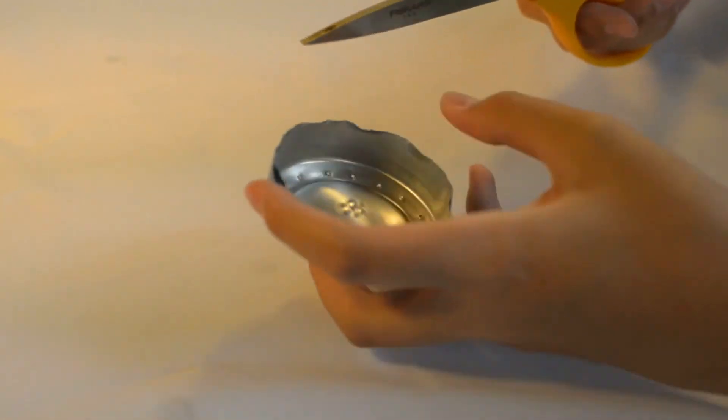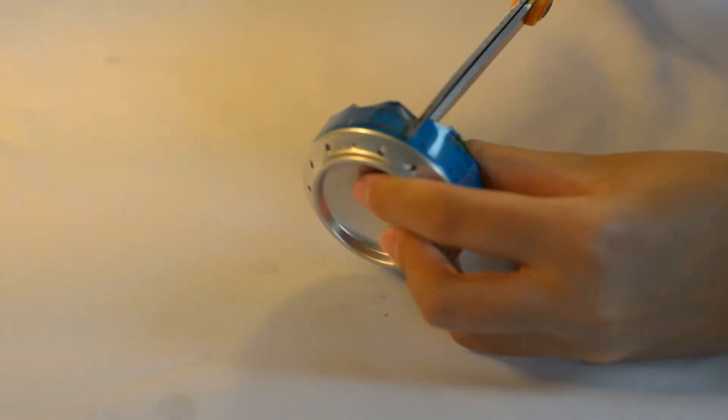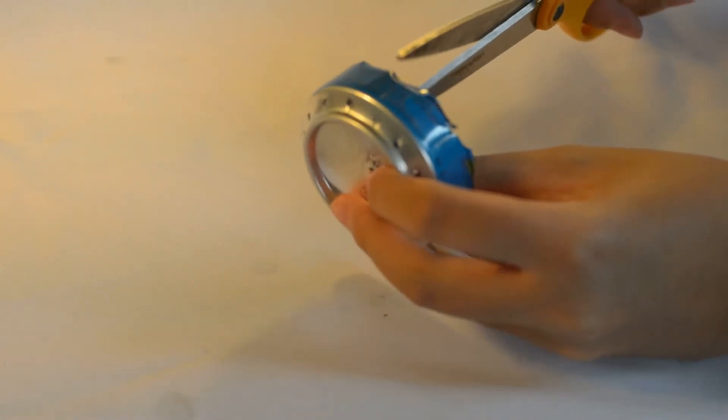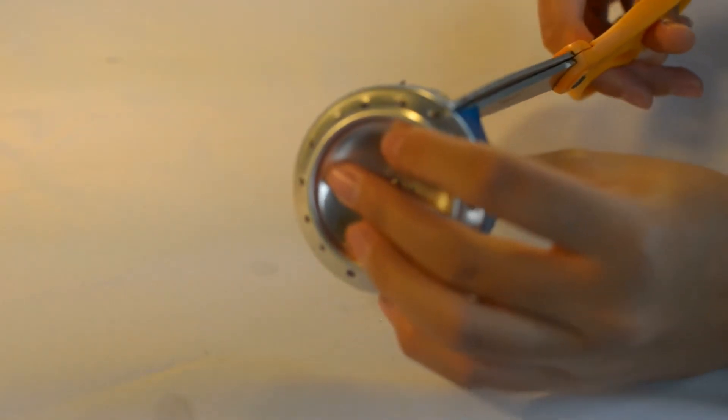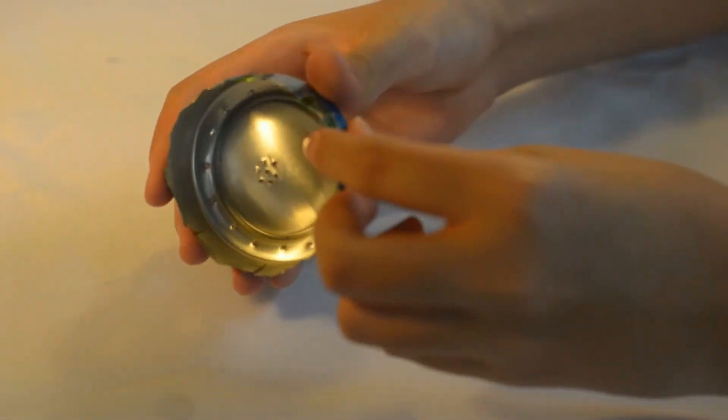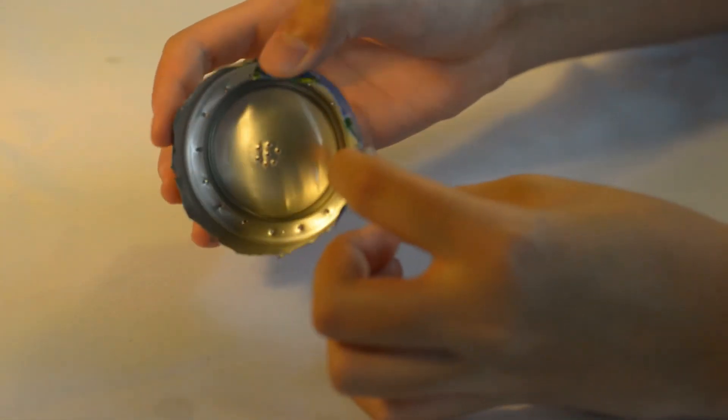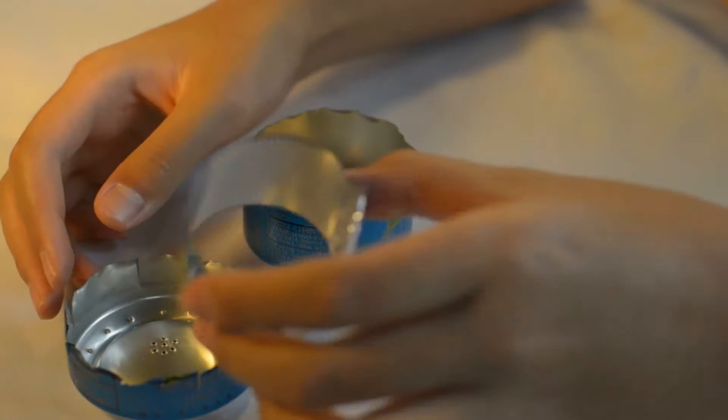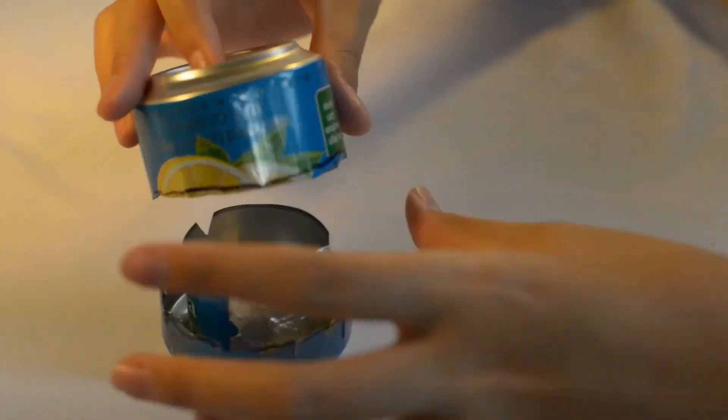To finish off your stove, cut eight slits at the bottom of the top burner. Insert the middle wall and fit the burner to the bottom.